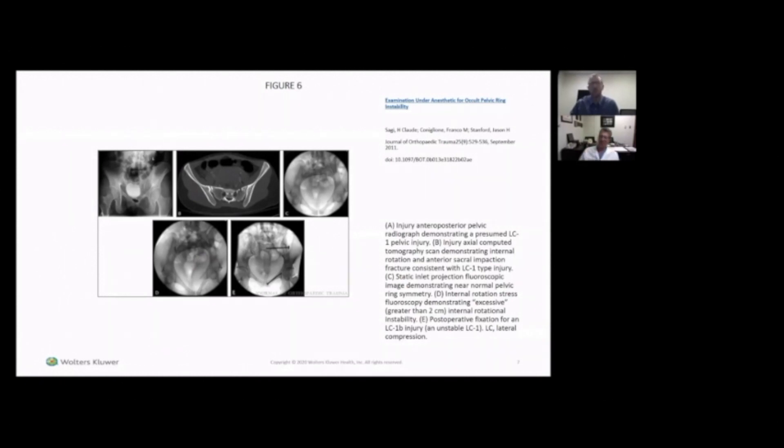If you could give a one-minute synopsis on the take-home points and how this affects your practice and how you use this in current times. A, things can be more unstable than they appear, and B, that there are other planes of instability that we may not be recognizing. And that some of the poor results we see in pelvic fractures may be due to unrecognized instability that's going undertreated.